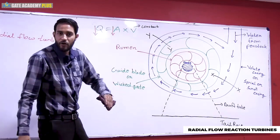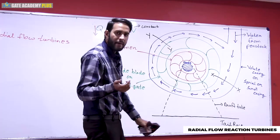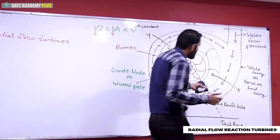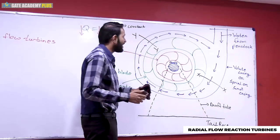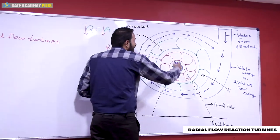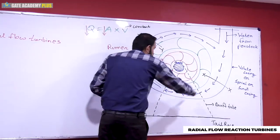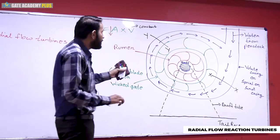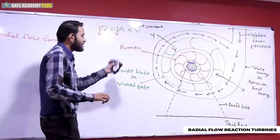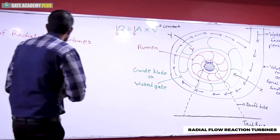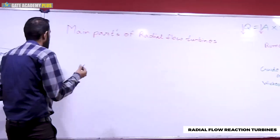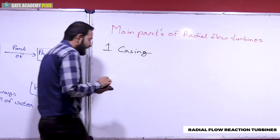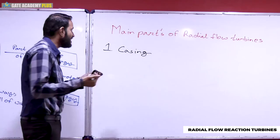The spiral casing has reducing cross-section area so the discharge compensates with area to keep velocity constant. This applies to both inward and outward flow turbines. The guide blade, scroll casing, water flow path, and draft tube exit are all visible. Our first main part is the casing.